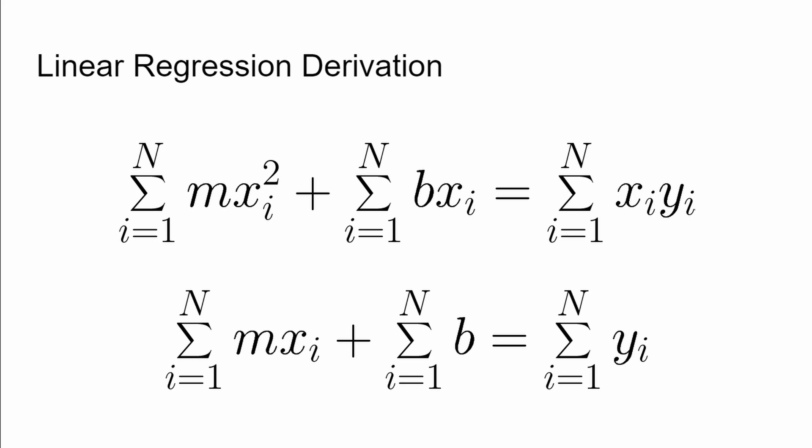So we're adding up b n times. So we could just replace that with the quantity n times b and get rid of the summation there. Likewise, in both the first and second equations, you have the sum over 1 to n, m times x.